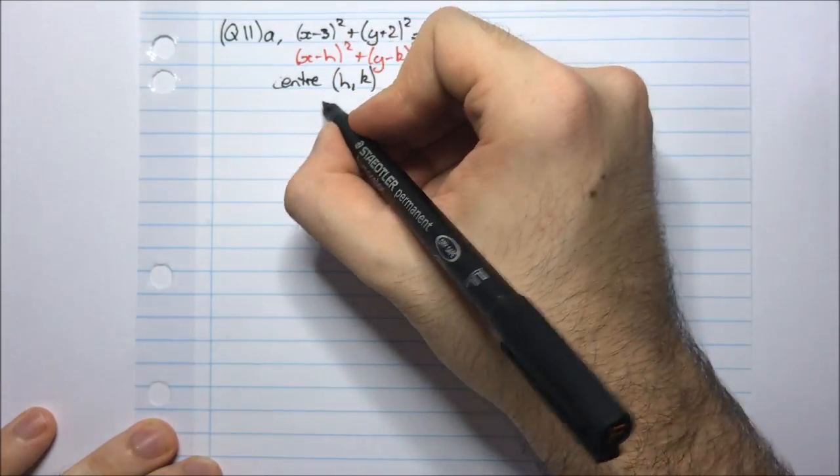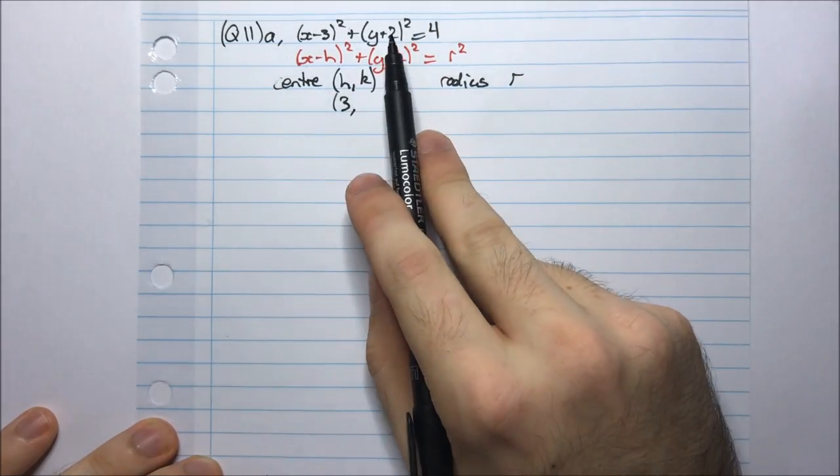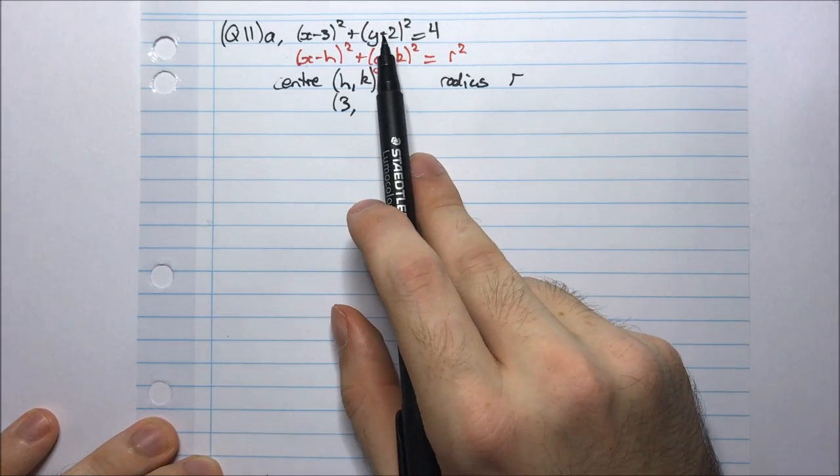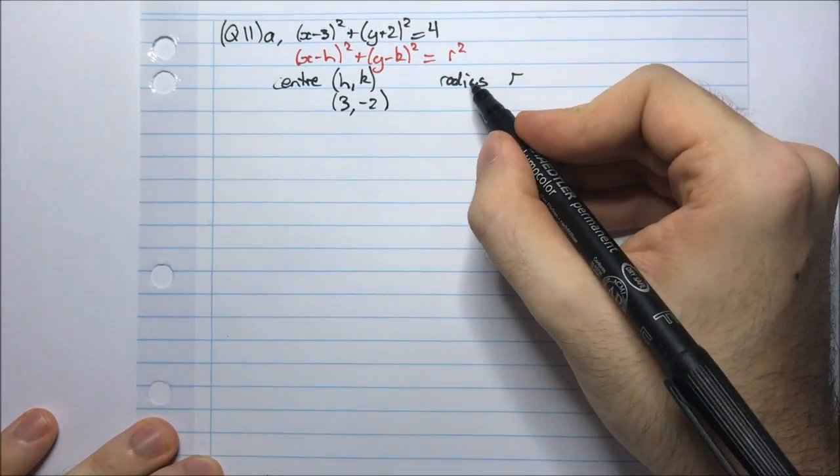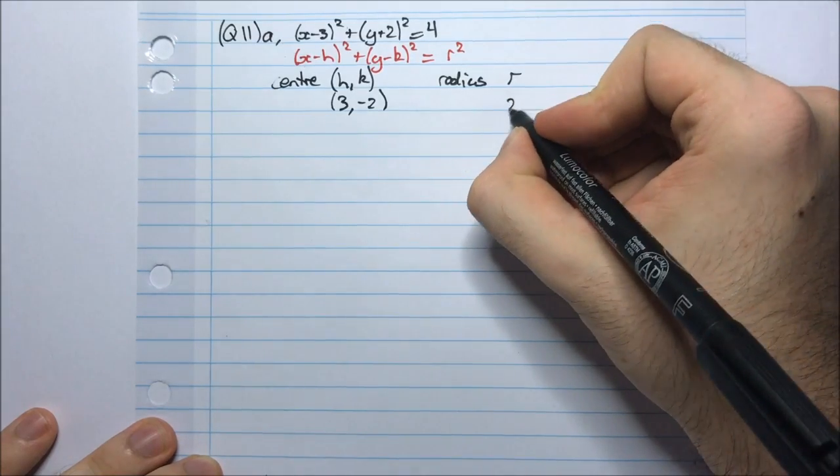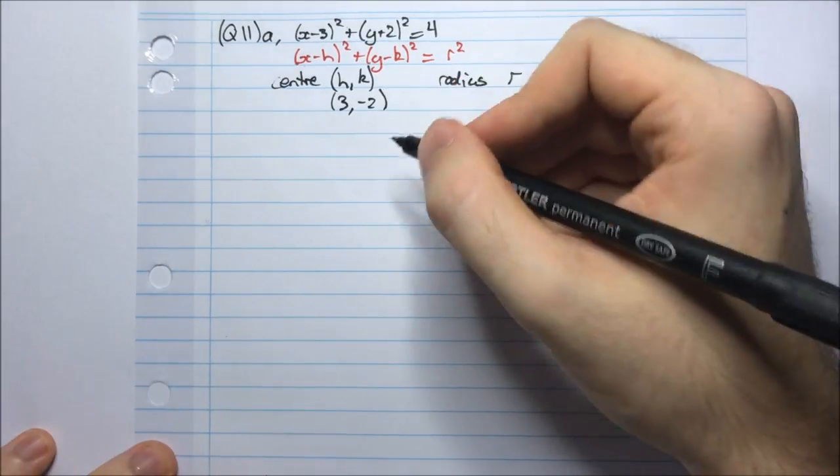So in our case, h is 3 and k is -2 because I need to account for this being a negative here while here it's a positive. So it's -2 and my radius is the square root of 4 which is 2. So now I can go ahead and draw my circle.